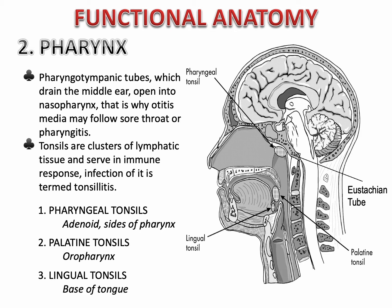There are several tonsils: pharyngeal tonsils (where the adenoids are) on the sides of the pharynx, palatine tonsils in the oropharynx, and lingual tonsils at the base of the tongue. The most common site is the palatine tonsils, and removal is called tonsillectomy — indicated when tonsillitis is recurrent or there is air obstruction. Ideally, since tonsillitis is usually an infection, it is treated with antibacterials or antibiotics.